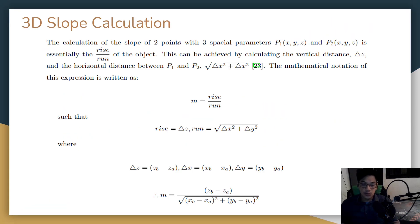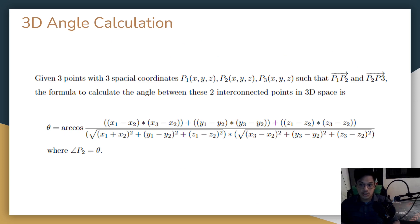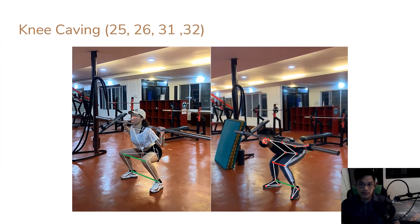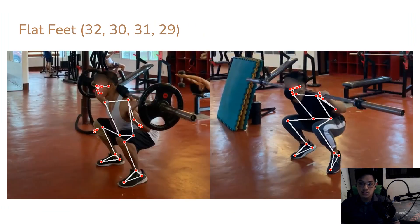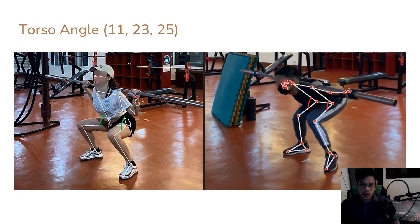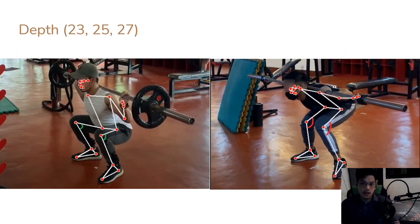For the basic operations, we have 3D slope calculation, which is essentially taking the rise over run of the spatial coordinates x, y, and z with the deltas of x, y, and z in the equation. We have 3D angle calculation, which is the inverse cosine of this equation. And lastly, we have 3D distance calculation, which is the distance equation of the deltas of x, y, and z. These three basic operations are used and compiled to calculate each of the following standards. We have knee caving, which compares the distance of the knees and the ankles, flat feet, which checks for the slope of the toes and the heels, head alignment, which checks for the slope of the nose and the ears, torso angle, and depth, which checks for the angle of the hips, knees, and the ankles.